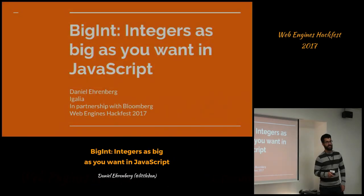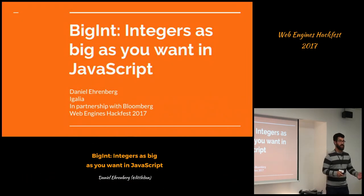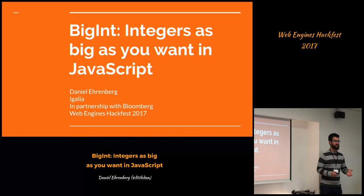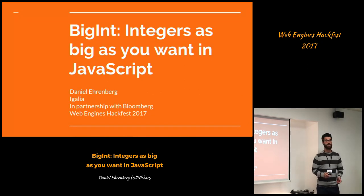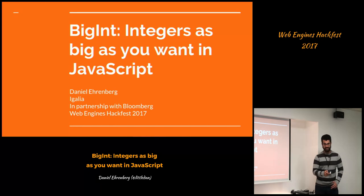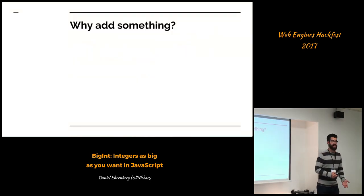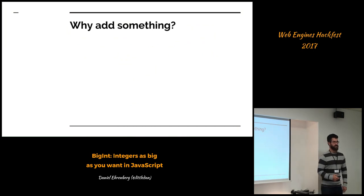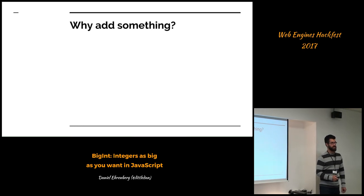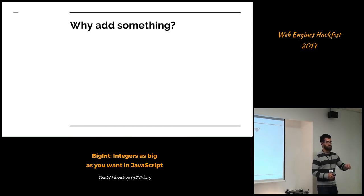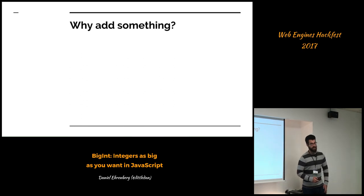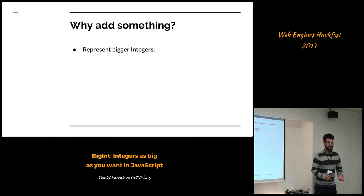I wanted to talk about BigInt. It's a feature that I'm happy to have worked on with a bunch of people adding to JavaScript. There's BigInt — you can add integers as big as you want. So first question is why? We only have numbers. Numbers in JavaScript are double precision floating point numbers, and every integer up to 53 bits can be accurately represented in numbers. But that's not really enough for everything that programmers work with, even if it works for most things.